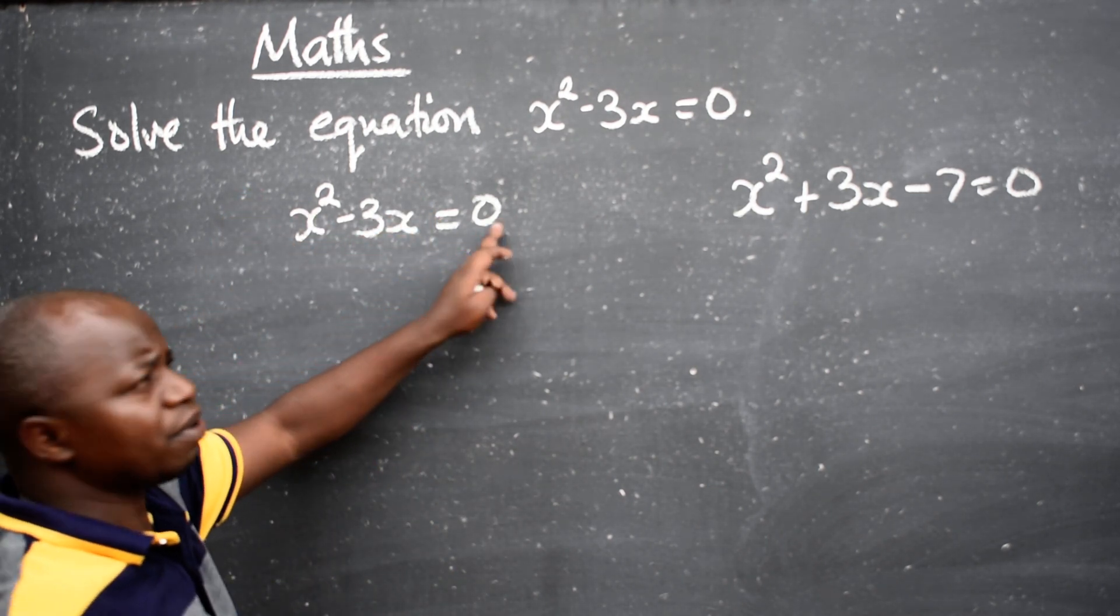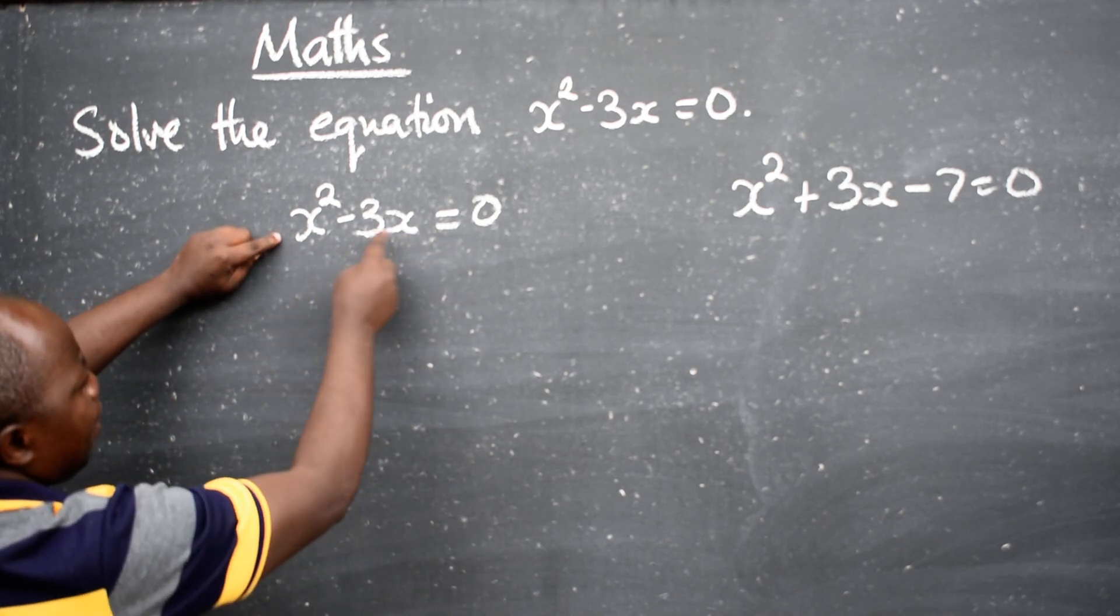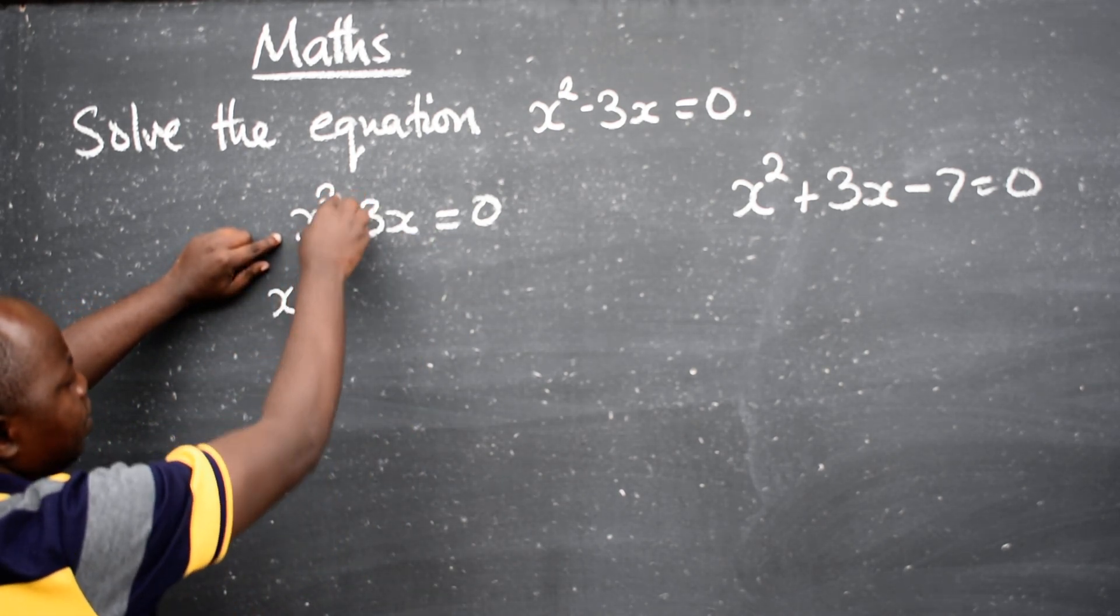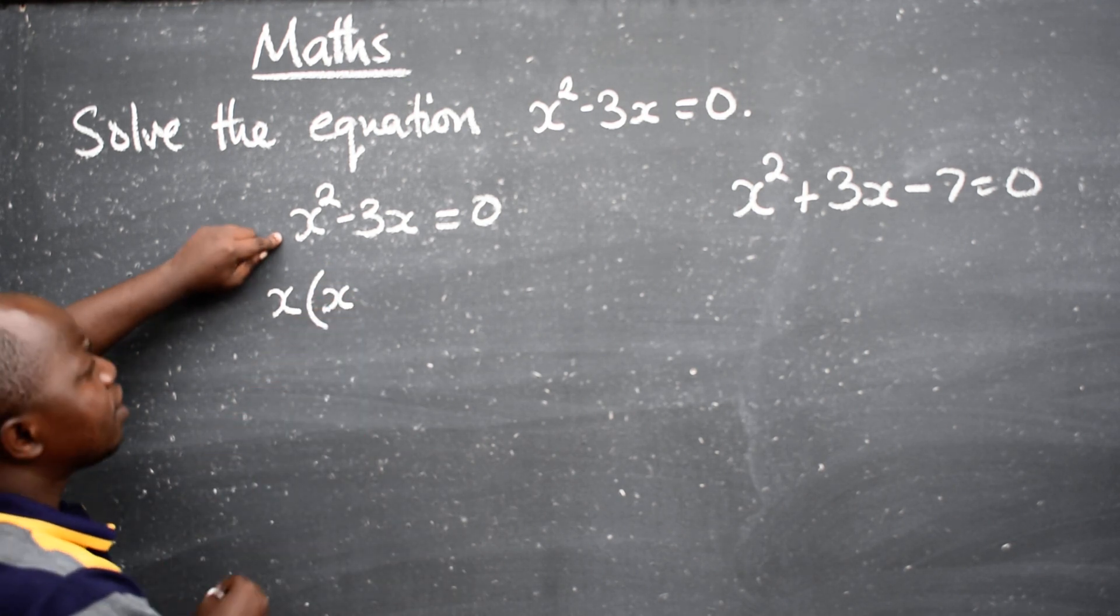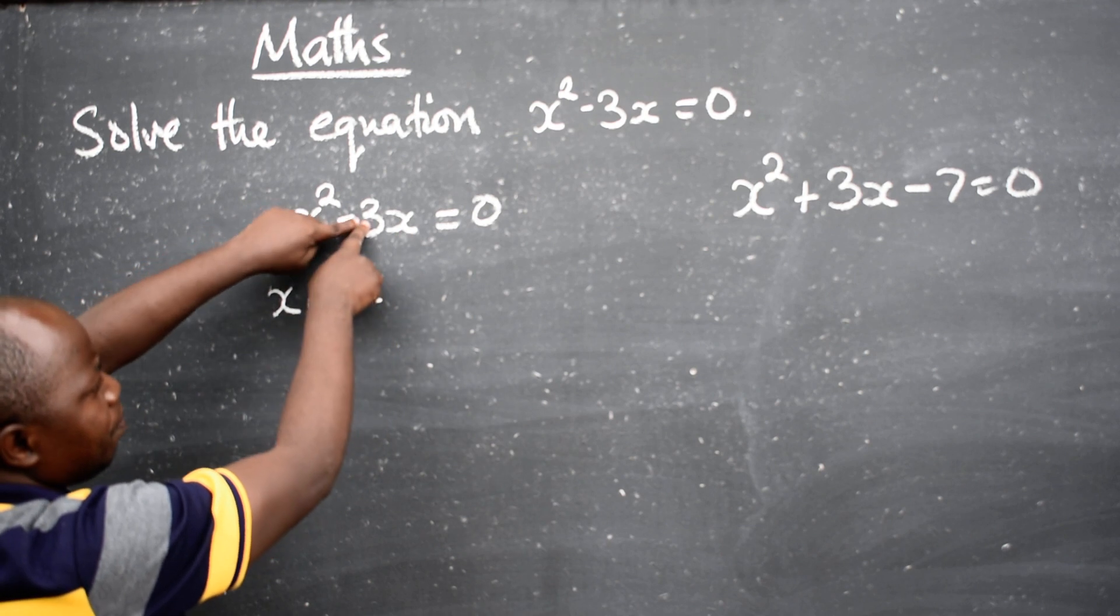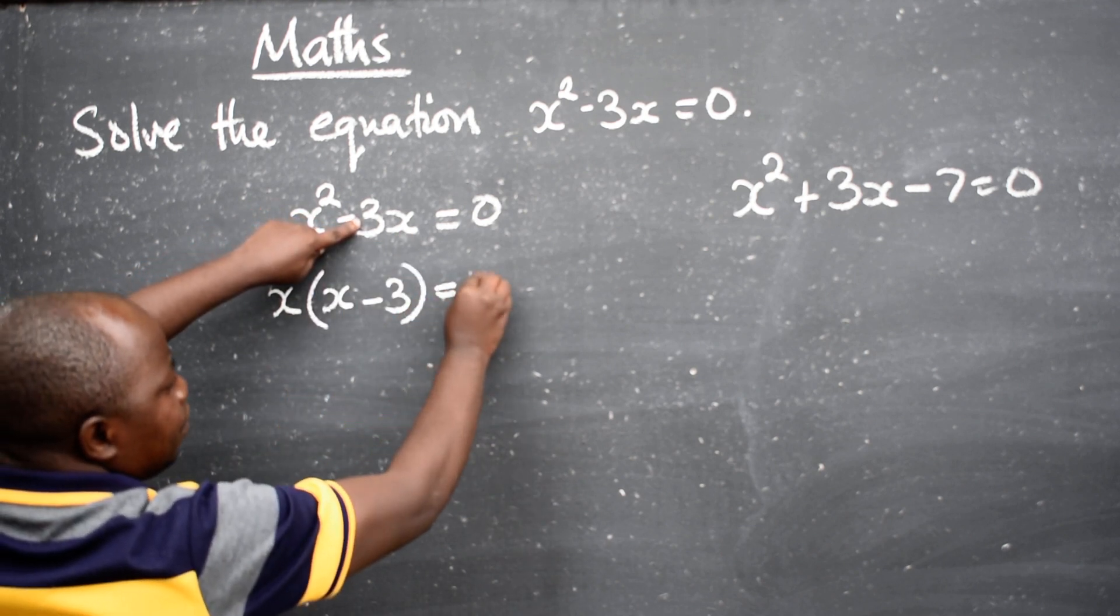There are two terms equated to zero. So you just factorize here. What is common? X. X into x squared will remain with x, minus x. X will cancel or remain with a three here. It is equal to zero.